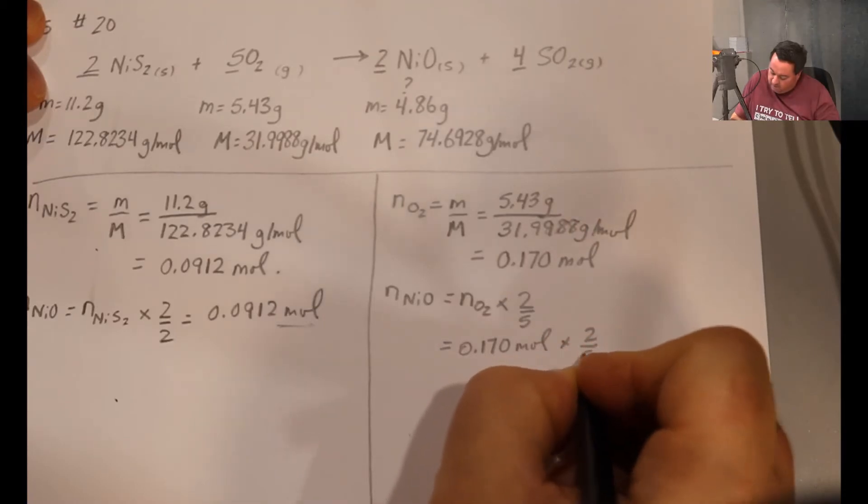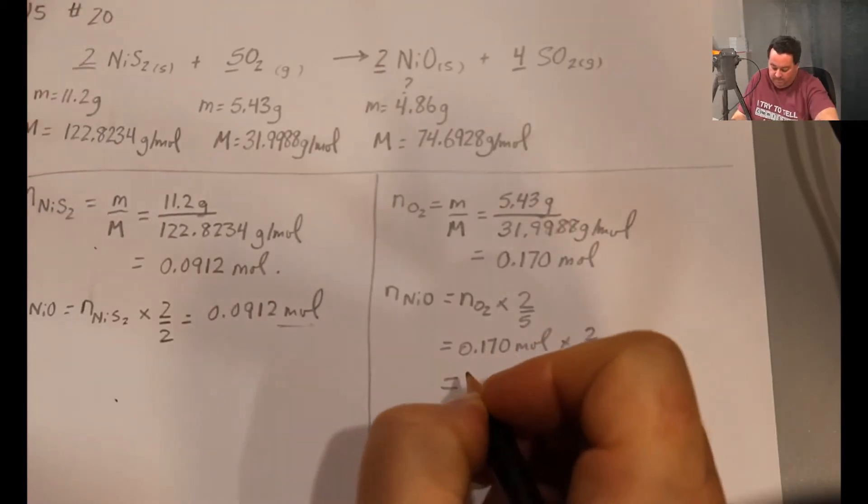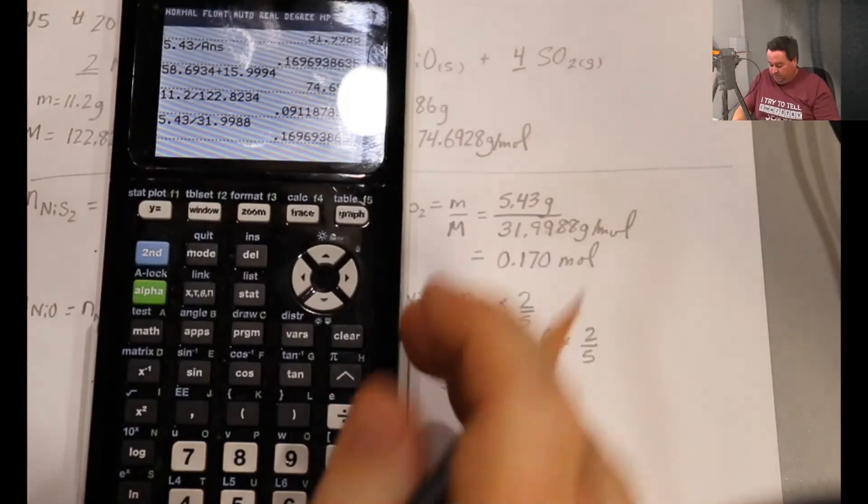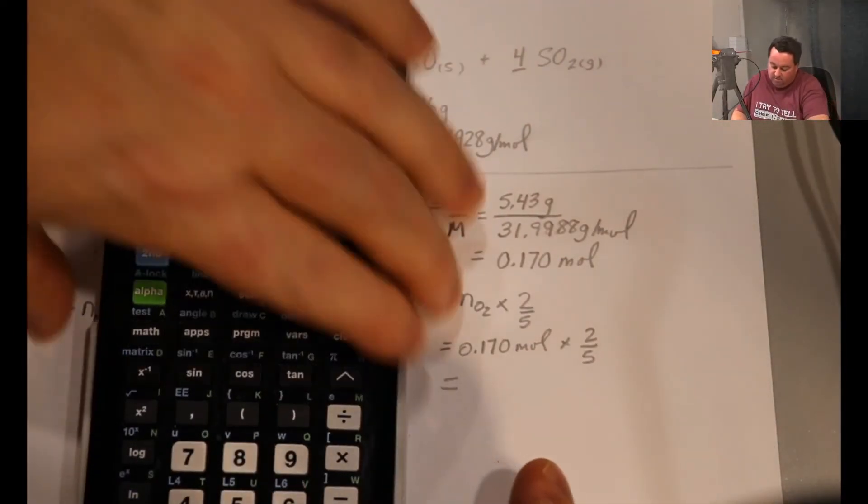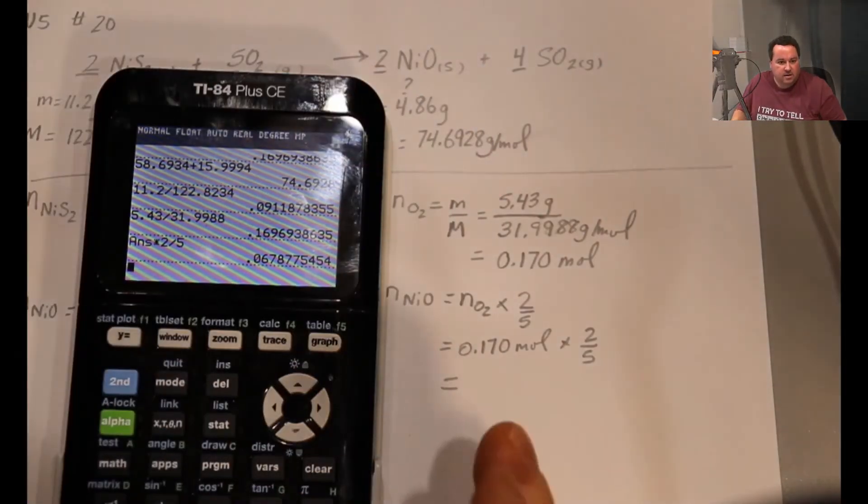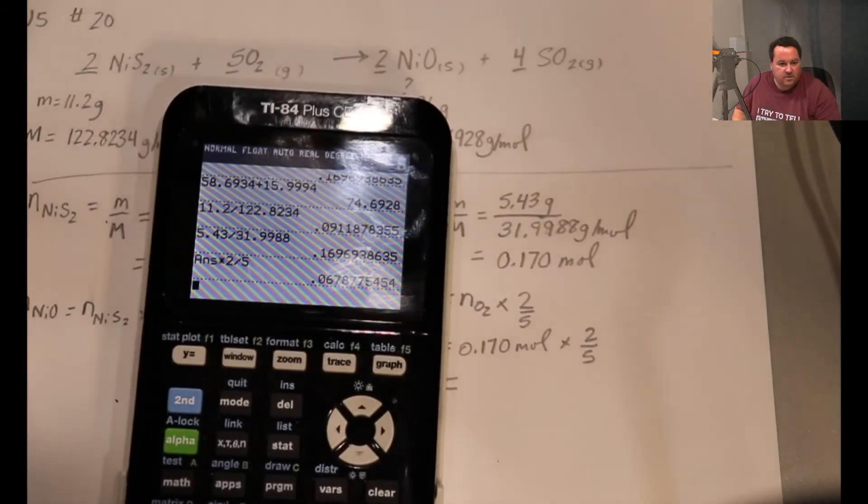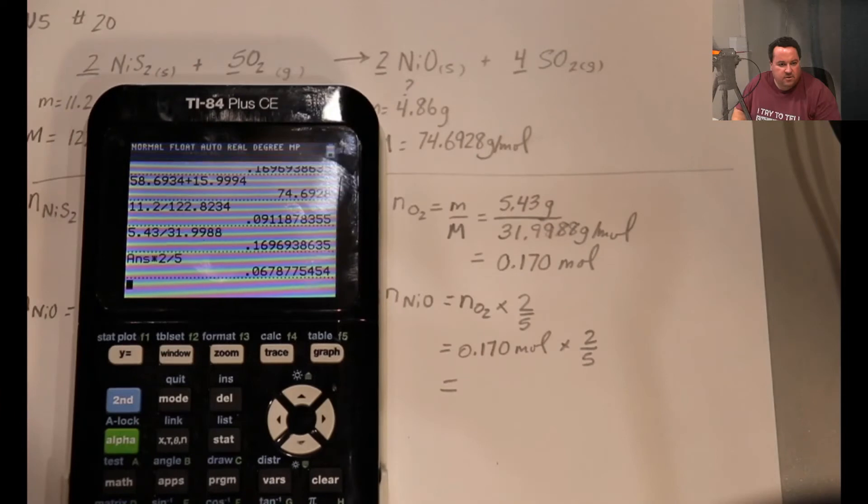Times two over five equals, times two divided by five, and that is, to three sig figs, 0.0679.